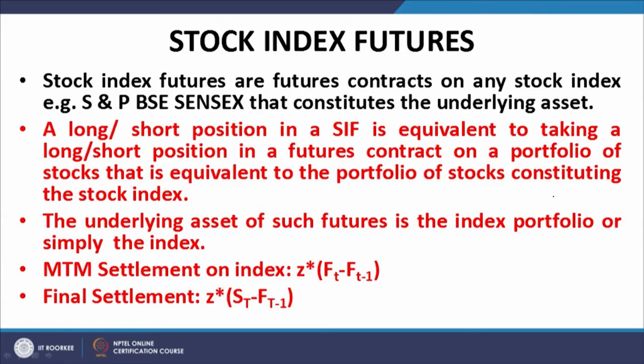What does it mean? It means that on the date of maturity of the futures contract, the short party should be delivering this portfolio of stocks to the long party. However, the delivery of the index is impractical, so we talk about cash settlement. The MTM settlement is given by Z* multiplied by (F_T minus F_{T-1}), the differential between yesterday's settlement price and today's settlement price, multiplied by Z — the lot size or contract multiple.